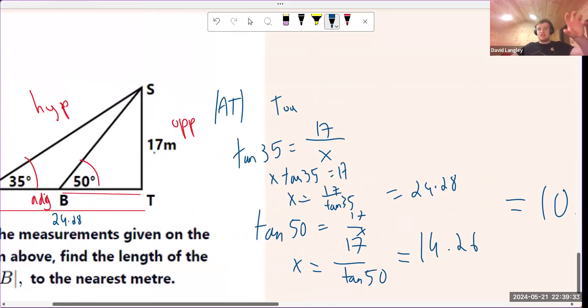You're going to label your sides adjacent, hypotenuse, and opposite, depending on where the angle is. And then you're going to pick out which one you're using, sine, cos, or tan, based on SOHCAHTOA, and just sub into the formula, and you can find your sides or your angles.